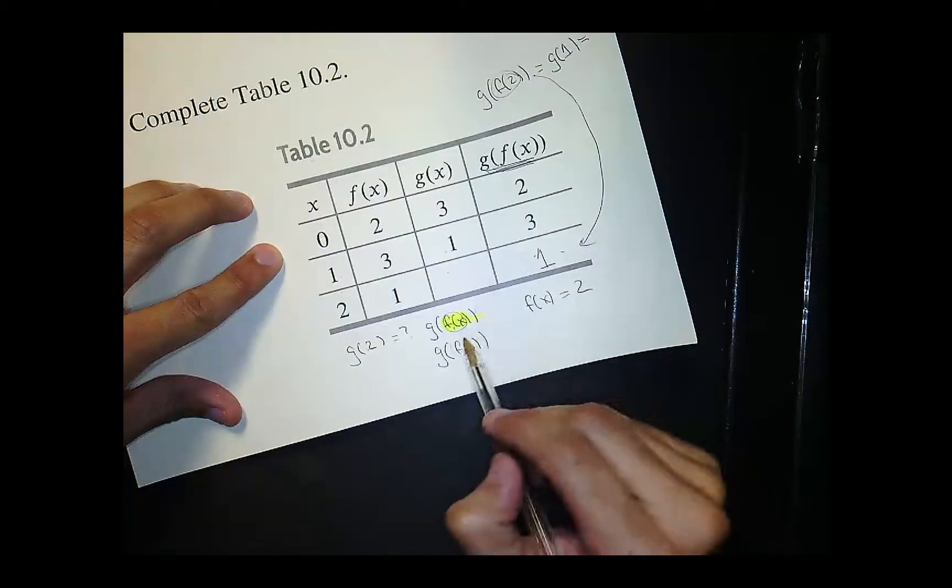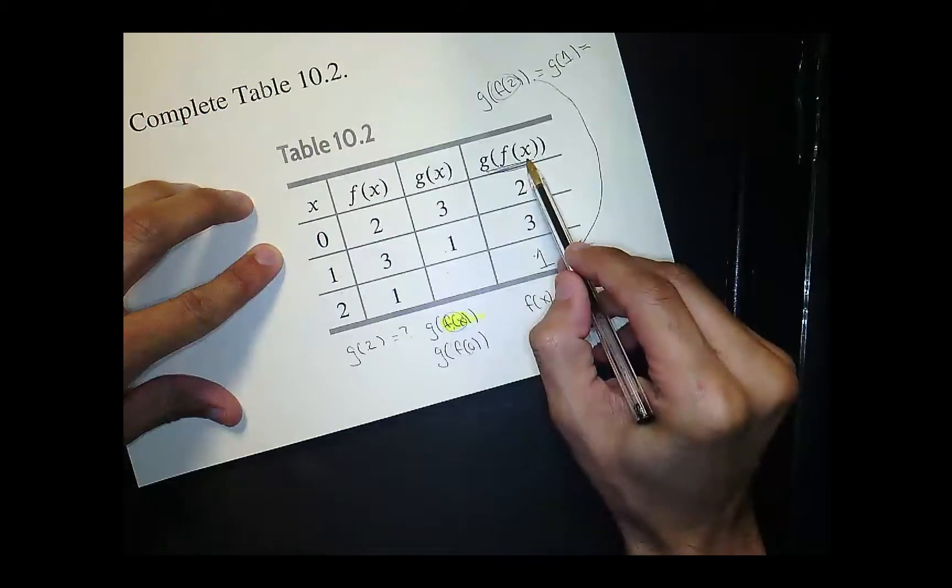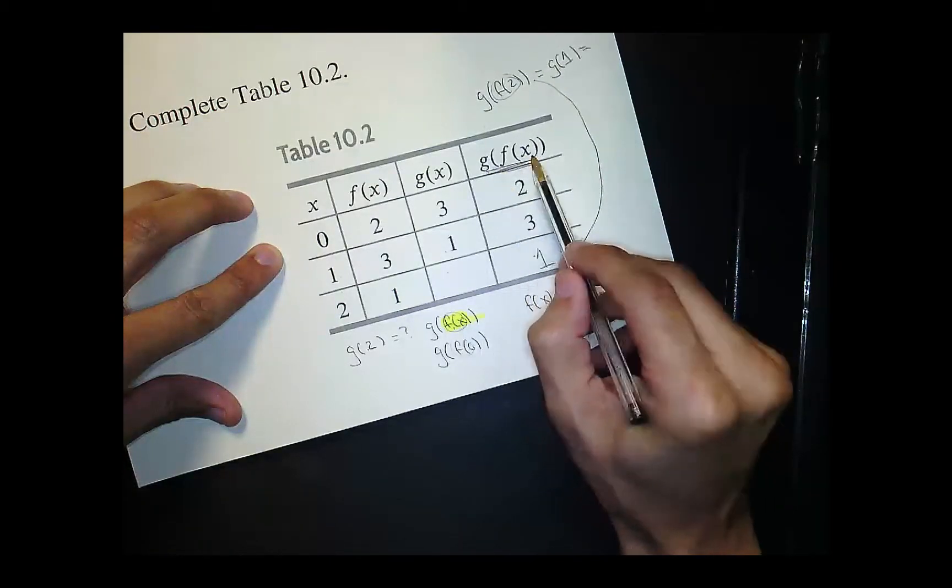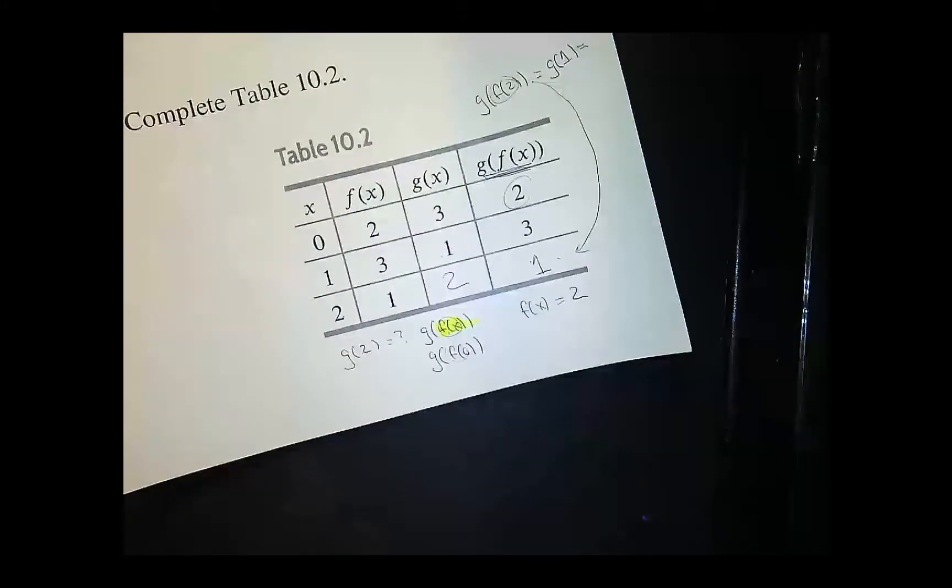So now I can go to my rightmost column and I can find g of f of 0. So g of f of 0 is 2. So that's my answer for that one. Okay, let's look at another example.